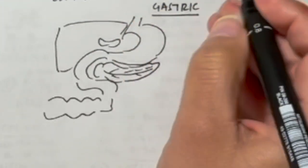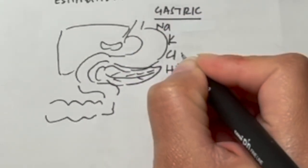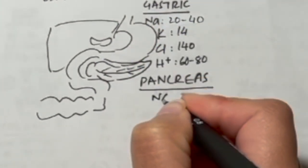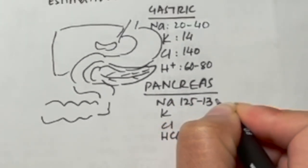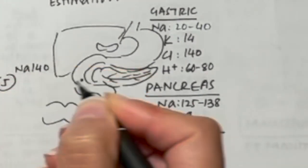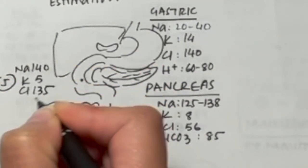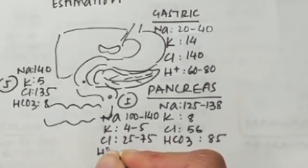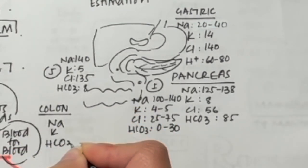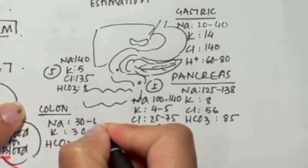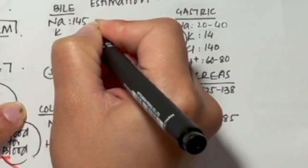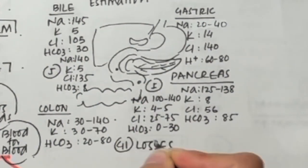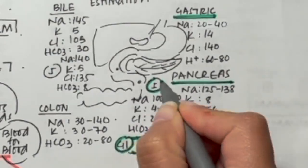Gastric juices usually contain sodium, potassium, and lots of chloride and hydrogen ions — so in vomiting, acid is lost. Pancreatic juices are alkaline and contain high amounts of sodium and chloride, some potassium, and lots of bicarbonate — this is what is lost through fistulae or in pancreatitis. Through a jejunostomy, potassium, bicarbonate, and large amounts of sodium chloride are lost. Ostomies can be similar to jejunum or colon depending on whether they are high or low, new or established. In diarrhea or colostomy, sodium, potassium, and bicarbonate are lost. Bile contains bile salts — sodium chloride is high and it is alkaline, so bicarbonate is also high. These estimates will guide investigations and what or how much we replace.